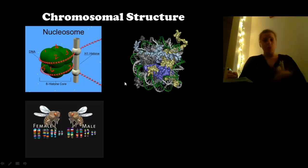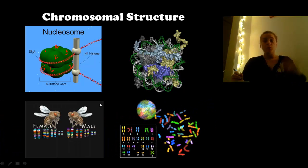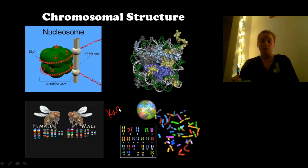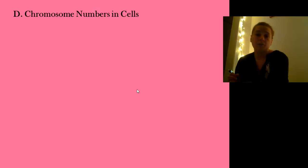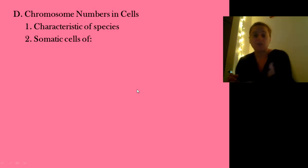During division we can take chromosomes, find them, and match them up to create a karyotype, where we look at them, mark and stain them. Chromosome numbers in cells are one of the ways we can identify a species — they're very specific. Somatic cells — remember 'soma' means body — are our body cells, like skin, lung, or kidney cells.